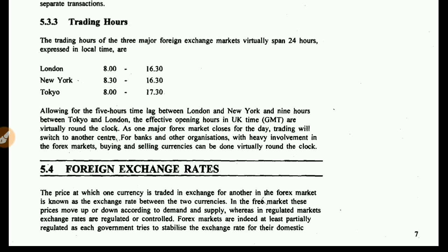In the free market, these prices move up and down according to demand and supply. When WTO arrived, international business became freer, with fewer tariff barriers. The WTO's main motto is to increase international business by removing tariff barriers, though currently America under the Trump government is imposing significant tariffs.